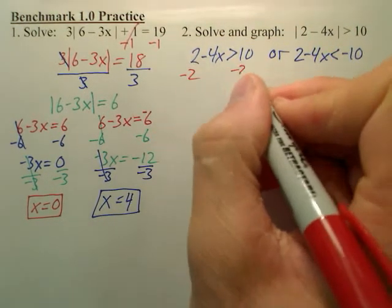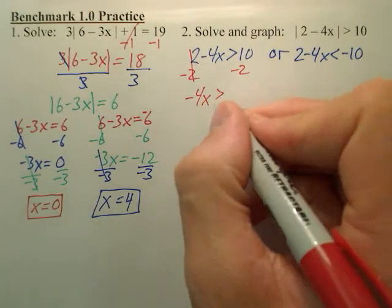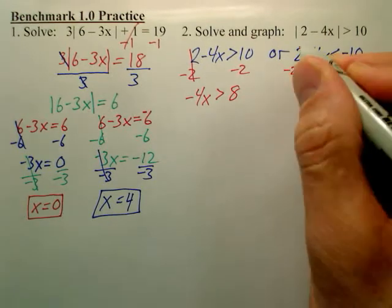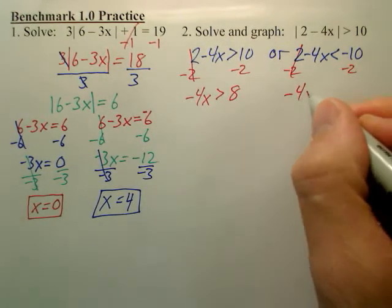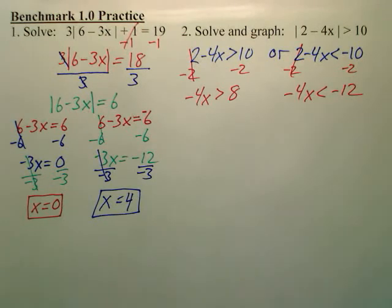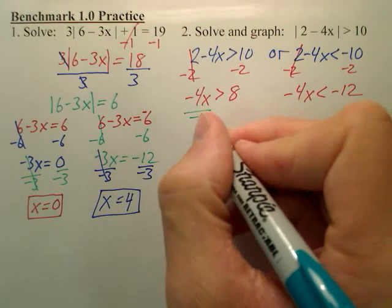So I minus the 2 over. So we've got negative 4x is greater than 8. Over here, I'm going to minus the 2 over. I've got negative 4x is less than negative 12. And next, I divide by negative 4.